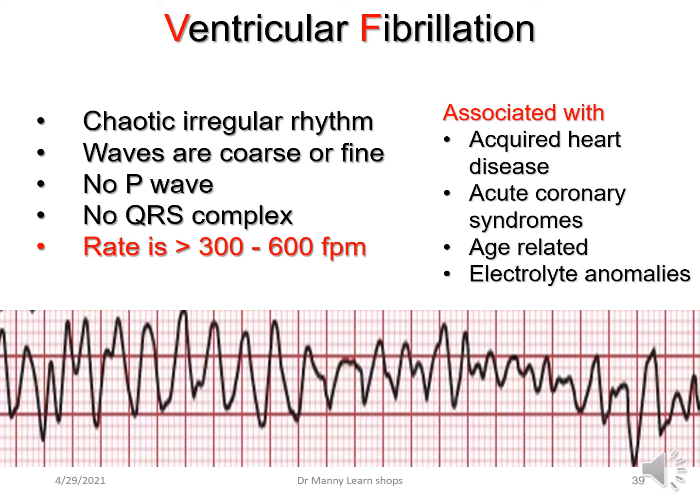Ventricular fibrillation is a further extreme, and can be coarse, very coarse, fine, or very fine. This is a chaotic irregular rhythm with no cardiac output — no P-wave, no QRS complex. The rate, if you want to determine it, is typically between 300 and 600 fibrillations per minute. It's associated with acquired heart disease, acute coronary syndromes, age-related causes, and electrolyte abnormalities, in particular hyper- or hypokalemia.